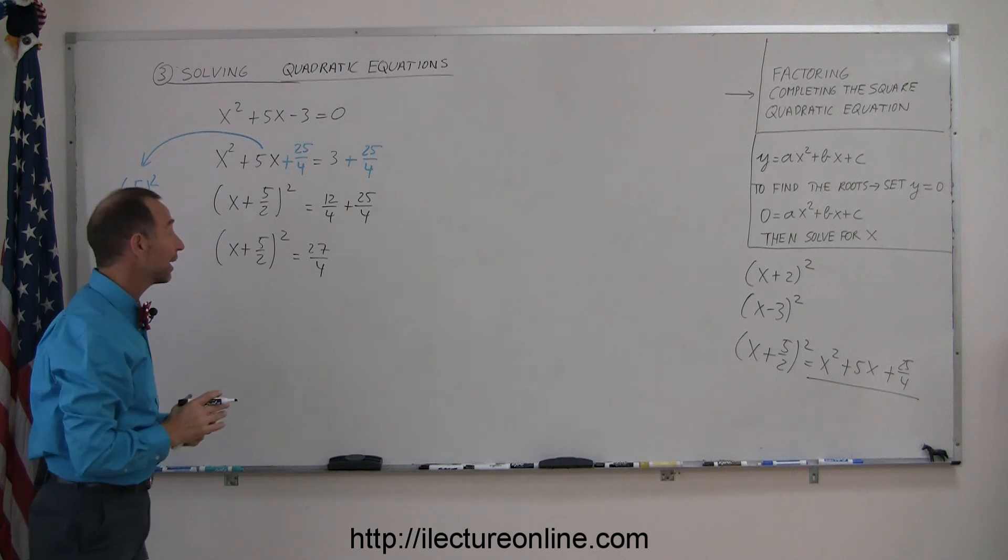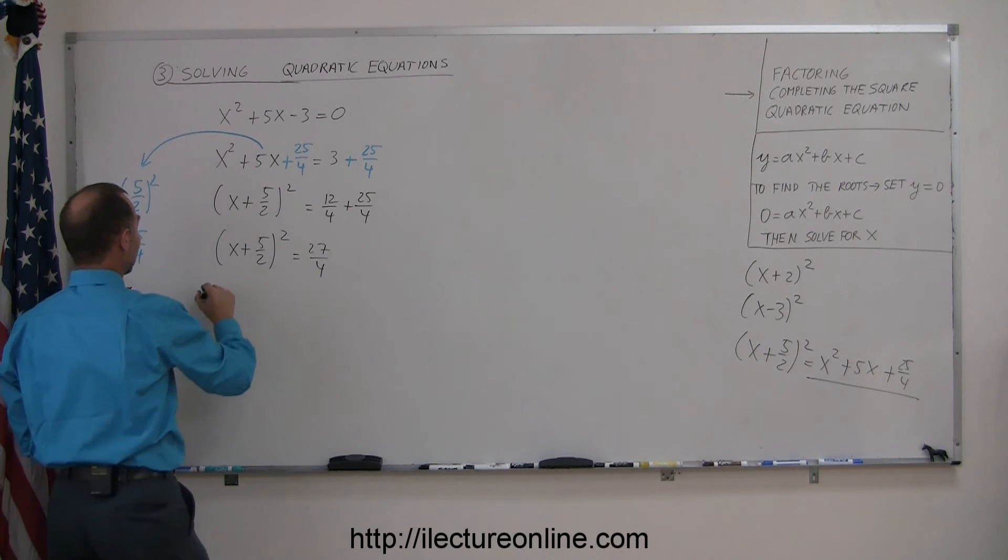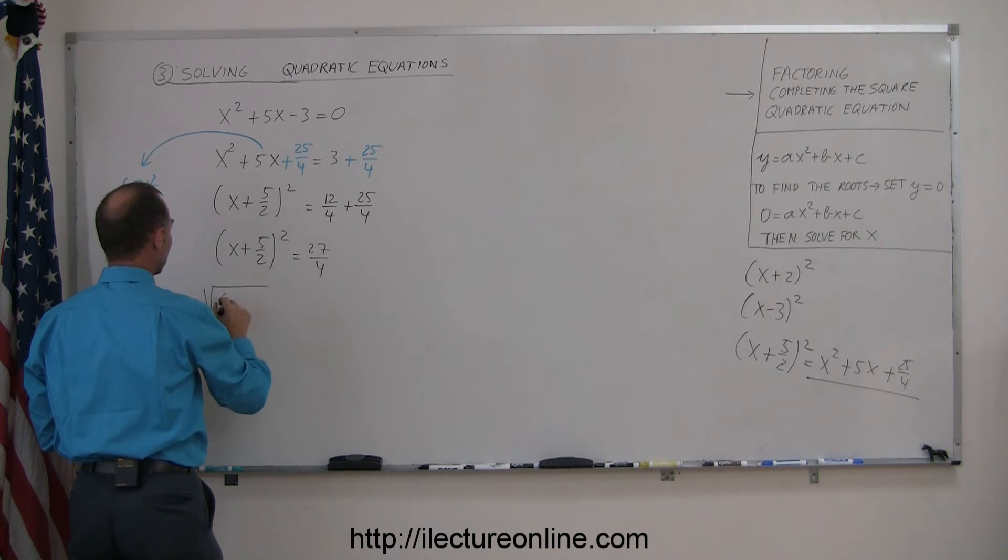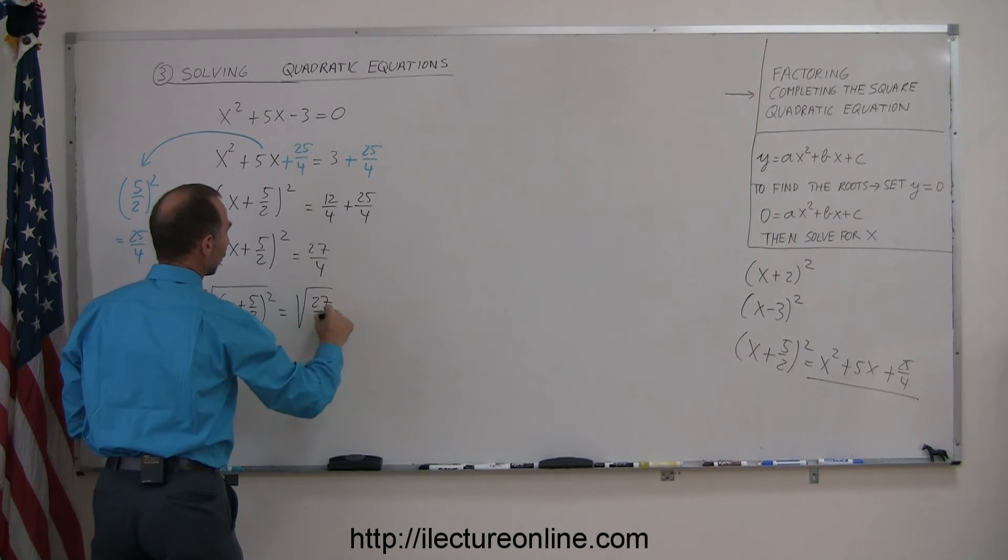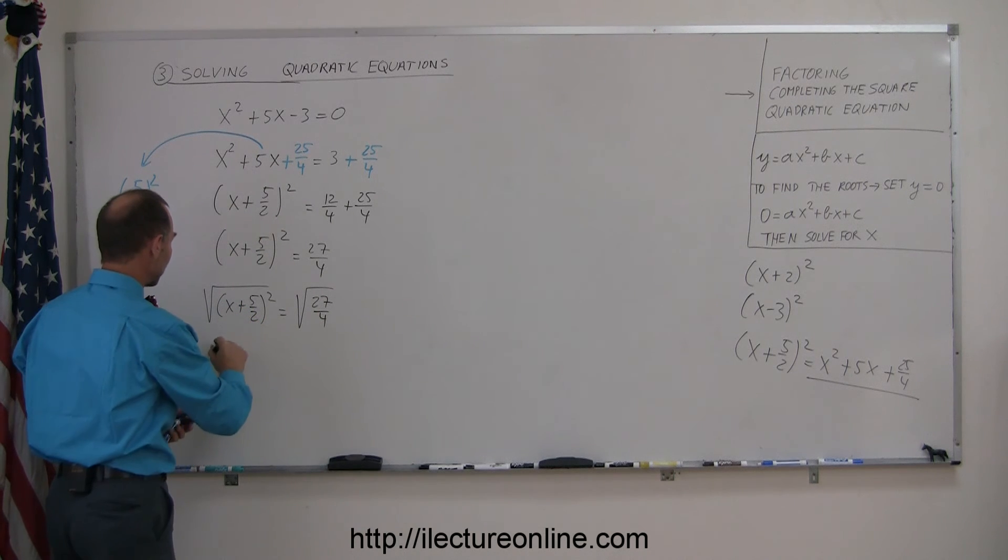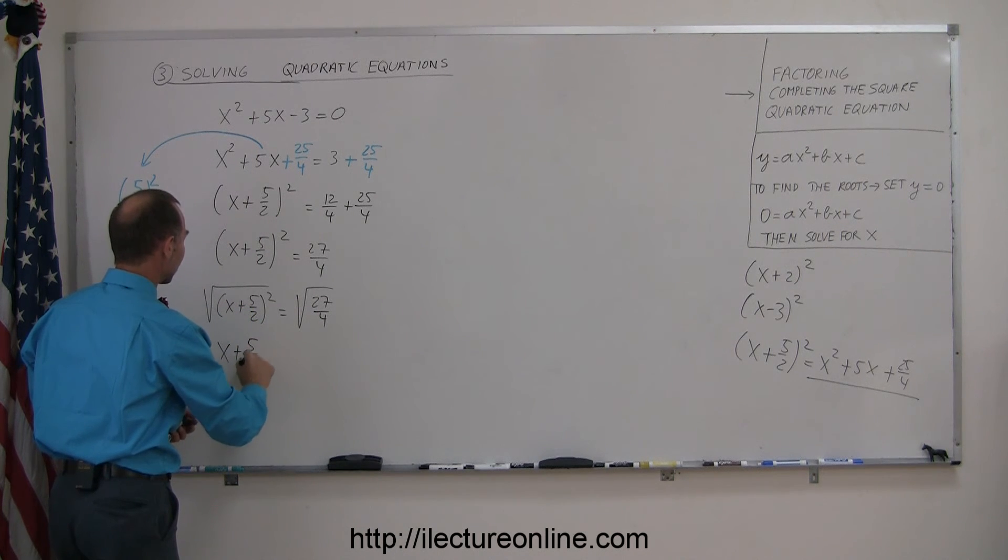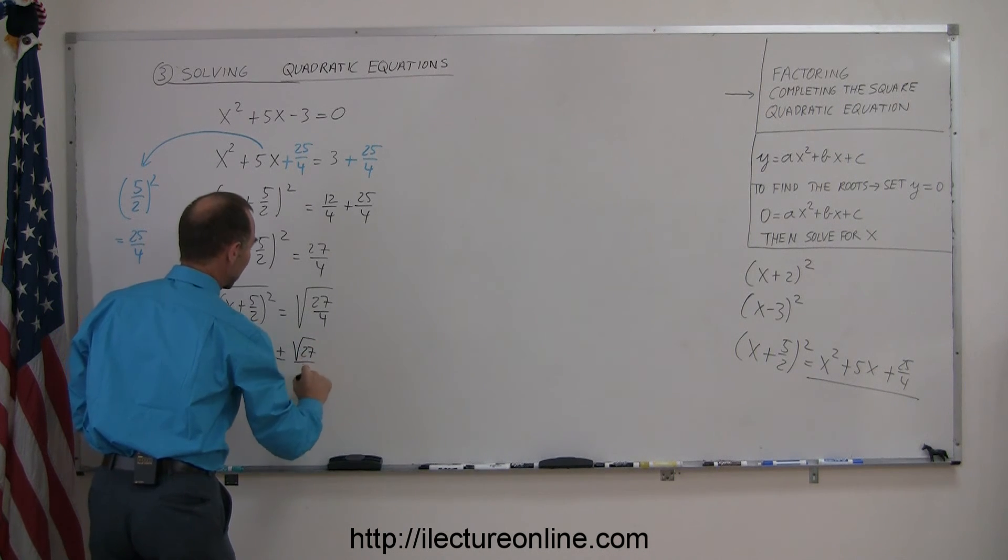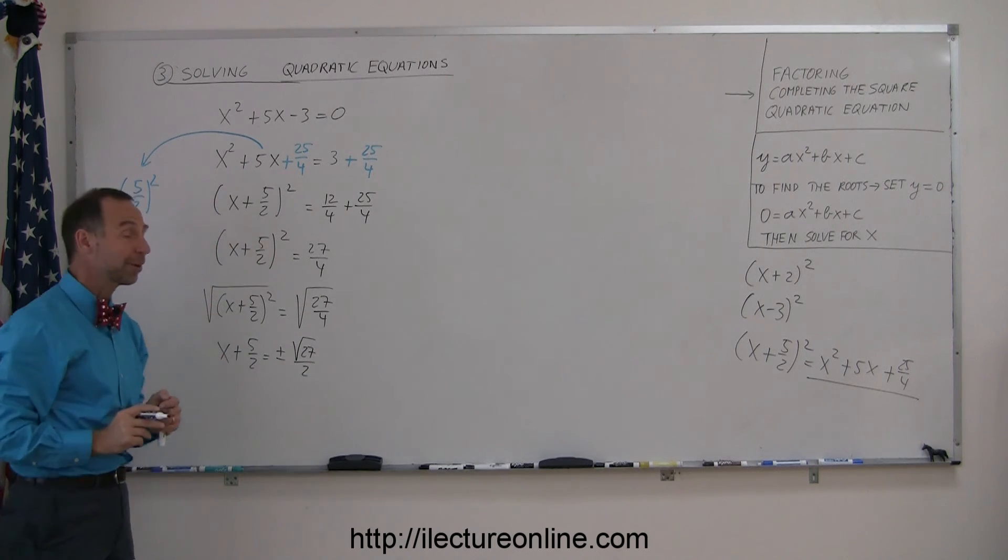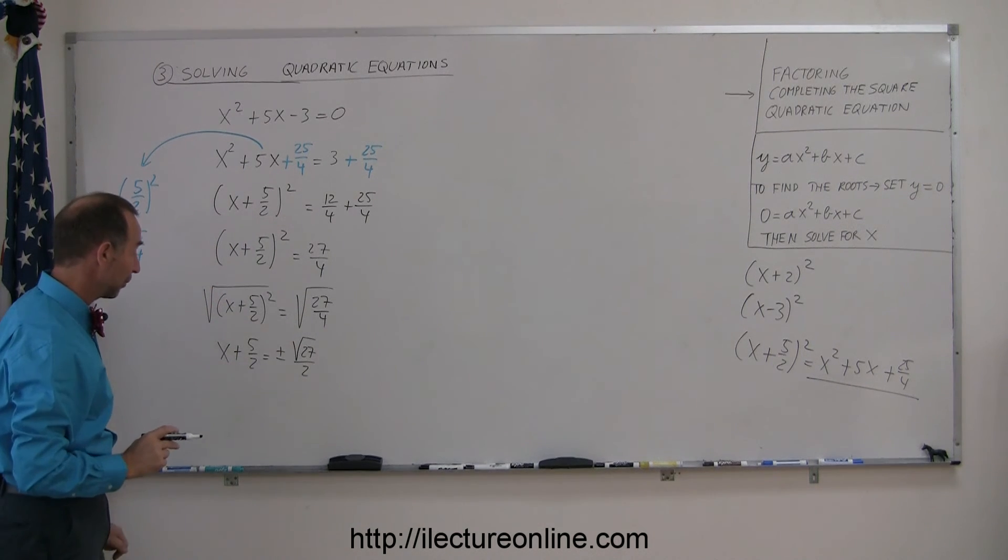And now I'm ready to take the square root of both sides, so I take the square root of the left side, square root of x plus 5 over 2 quantity squared is equal to the square root of 27 over 4, so this becomes x plus 5 over 2 is equal to plus or minus the square root of that, which is the square root of 27 over 2, because I cannot take the square root of 27, but I can take the square root of 4, which is 2.